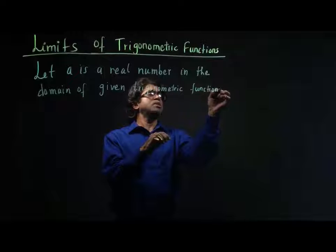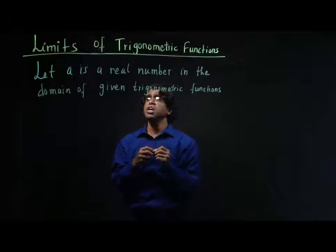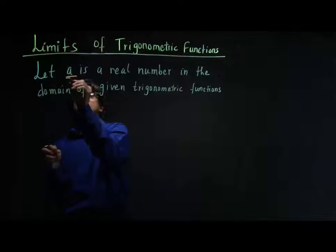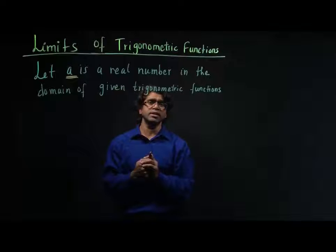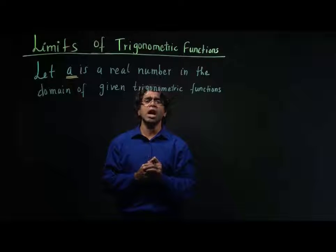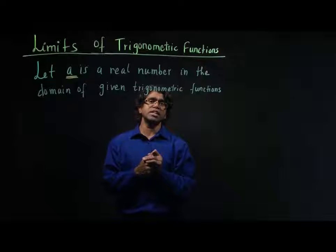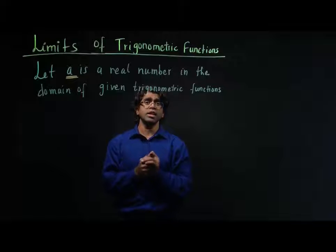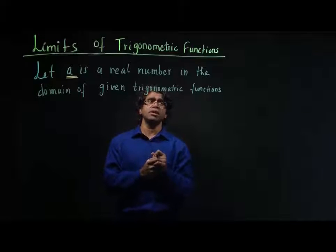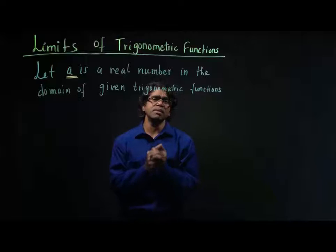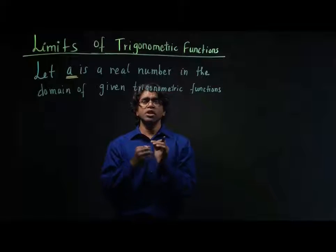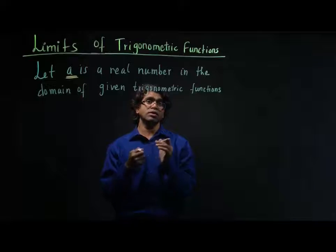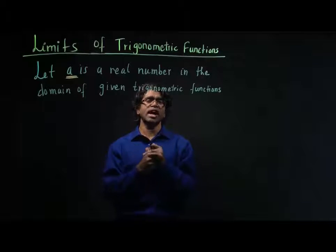The reason why I'm taking the point in the domain of the given trigonometric functions is because if the trigonometric function does not exist for that particular point, then we cannot find the limit. So the only way we can find the limit of any trigonometric function is if the point is in the domain of the given trigonometric function — or in other words, if it's defined for that value.